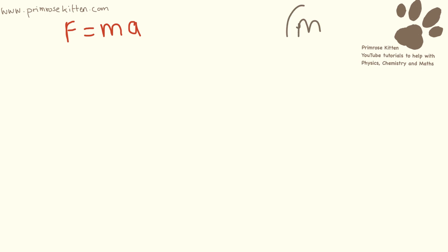So here I would like to have mass as the subject of the formula. We have force equals mass times acceleration. Now there is a times in here and we need to do the opposite. So mass is currently times acceleration. We need to divide by acceleration.